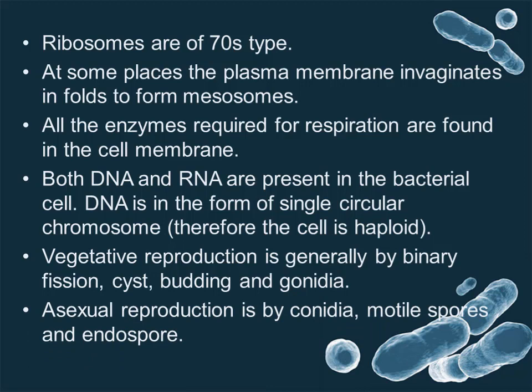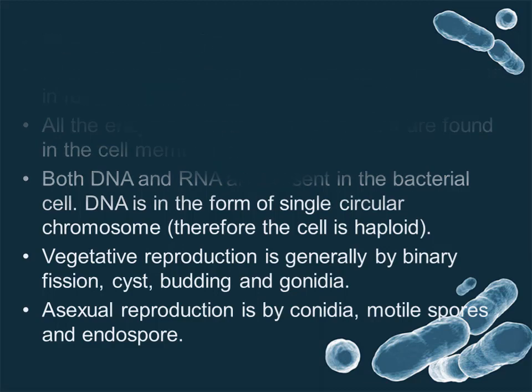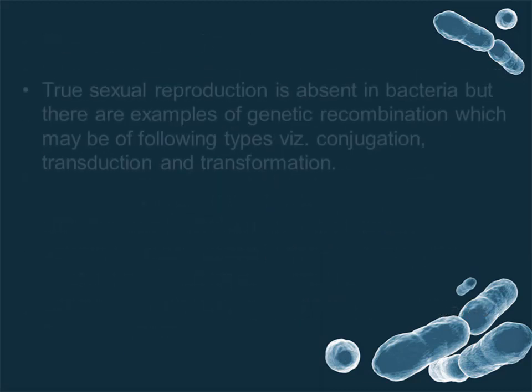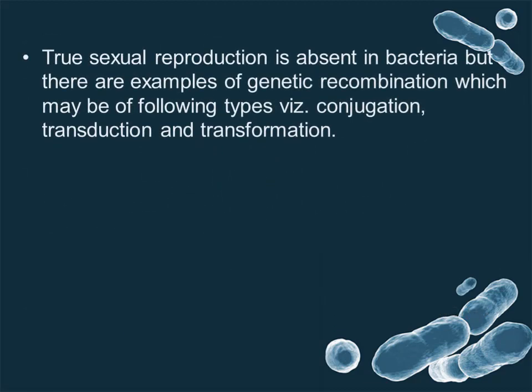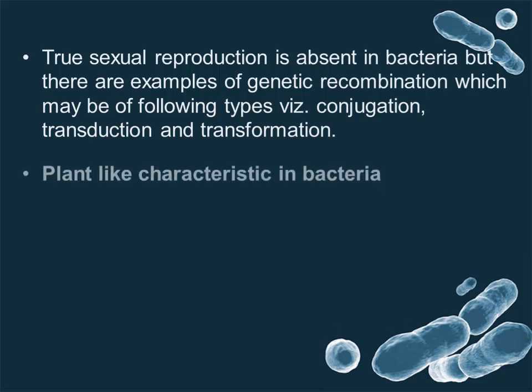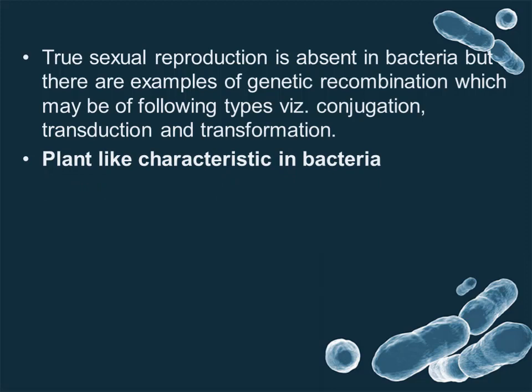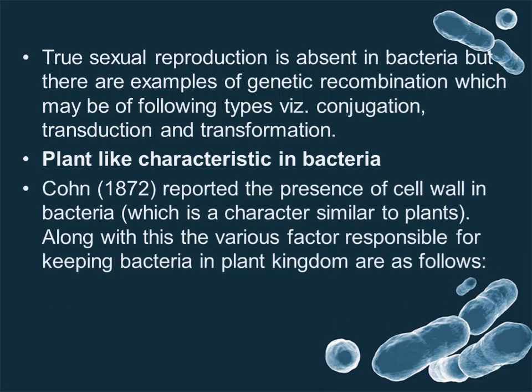Asexual reproduction also occurs by microspores and endospores. Sexual reproduction is absent in bacteria, but there are examples of genetic recombination, which may be of the following types: conjugation, transduction, and transformation. Cohen (1872) reported the presence of a cell wall in bacteria, which is a character similar to plants.